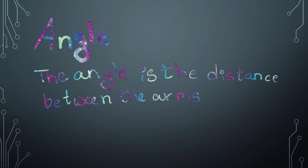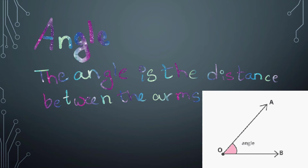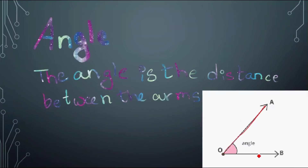Angle. The angle is the distance between the arms. When these two rays meet together at the common vertex or common endpoint, they form an angle. The pink shaded area over here is the angle — it is the distance covered by the two rays.